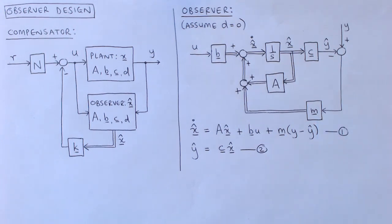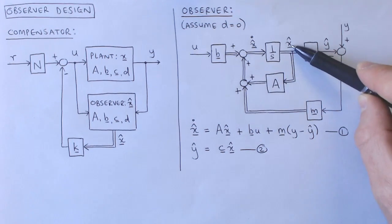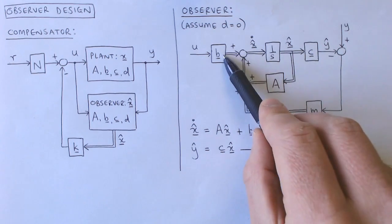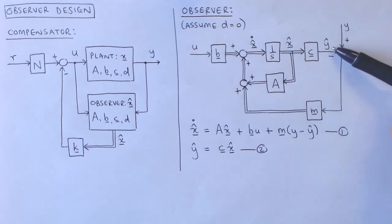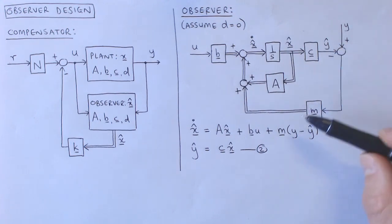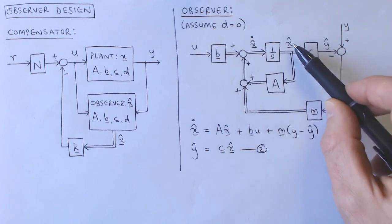We start this process by writing down the equations describing the observer from the block diagram. In equation 1, X hat dot is equal to A times X hat, plus B times U, plus M times Y minus Y hat. And in equation 2, Y hat is equal to C times X hat.